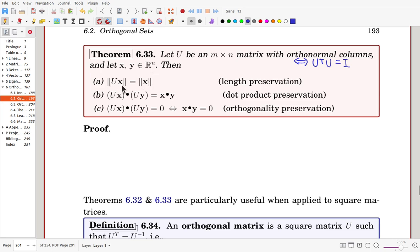then the norm of Ux is the same as norm of x. The length is preserved. And Ux dot Uy is same as x dot y. That product is preserved. And Ux dot Uy equals 0 if and only if x dot y equals 0. So orthogonality is preserved.